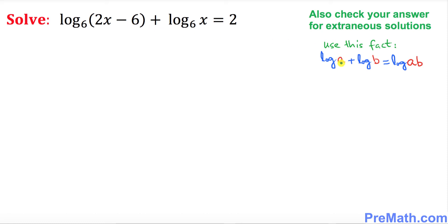by using this fact: if you have log of a plus log of b, we can write log of a times b. In this case, we have this a part and this is b, so we can compress them and write as a multiplication. So this is the way we can write log of 2x minus 6 times x as a product with base 6 equals to 2. Things look a lot simpler now.